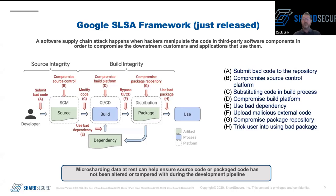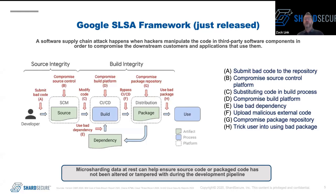The way it works is basically a tiered framework. In short, if you do these 10 things you hit tier one; if you add these five more processes, you hit tier two. There's a total of four tiers. This framework is very well worth reading and potentially adopting for anyone trying to secure the software pipeline.